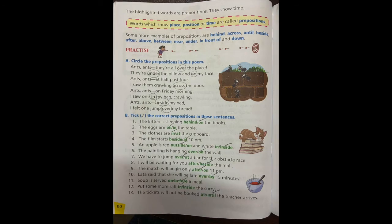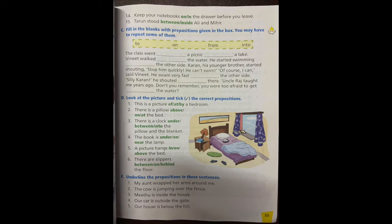Now look at section C: fill in the blanks with prepositions given in the box. You may have to repeat some of them. So what are the prepositions given in the box? To, on, on, from, into. Let's read: the class went dash a picnic, that is to a picnic, dash a lake, to a lake. The class went to picnic to a lake.